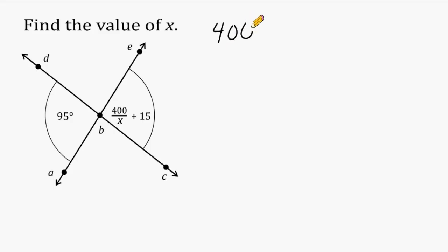So 400 divided by x plus 15 is equal to 95. So this expression represents the angle measure of EBC, and 95 represents the angle measure of DBA. And we know that this expression will be equal to 95 because these two angles are vertical angles. So the first step in isolating the x is to send this plus 15 to the other side of our equation by doing the opposite.